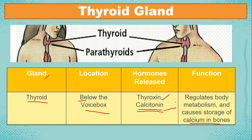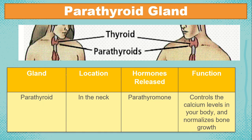Those are the hormones — thyroxine and calcitonin — located in the thyroid. Next, we have the parathyroid, located in the neck or below the thyroid. It releases the hormone called parathyroid hormone, which controls the calcium levels in the body and normalizes bone growth.